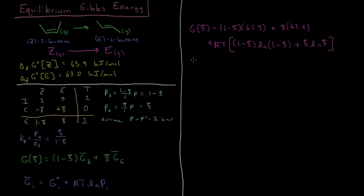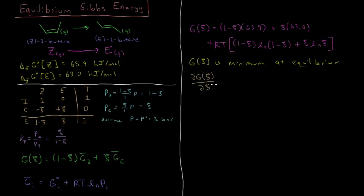At the minimum value of the Gibbs energy, that is when we are at equilibrium. This value being a minimum at equilibrium means it is a stationary point relative to the extent of reaction, so the partial derivative of the Gibbs energy with respect to extent of reaction equals zero. At equilibrium, we differentiate with respect to ξ, set that equal to zero, and that gives us the equilibrium extent of reaction.